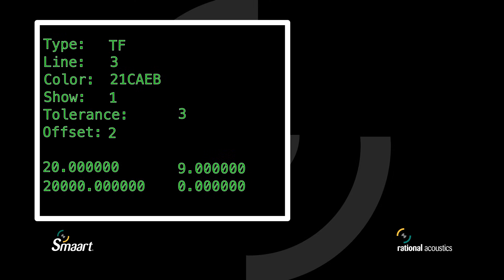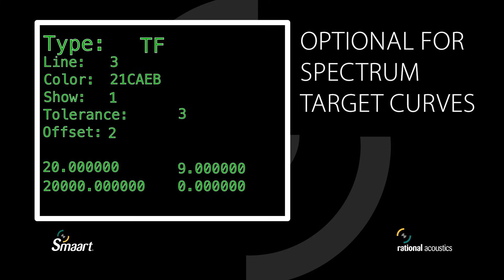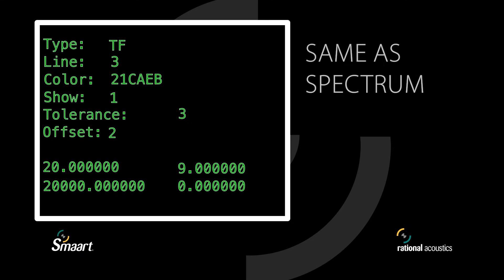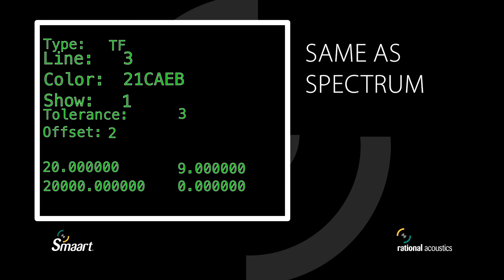Transfer function target curves share some heading lines with spectrum target curves, with a few additions. The first header line is Type, which should be entered as TF. This is optional for spectrum target curves but required for transfer function ones. Next you will see Line, Color, and Show, which function the same as in a spectrum target curve.